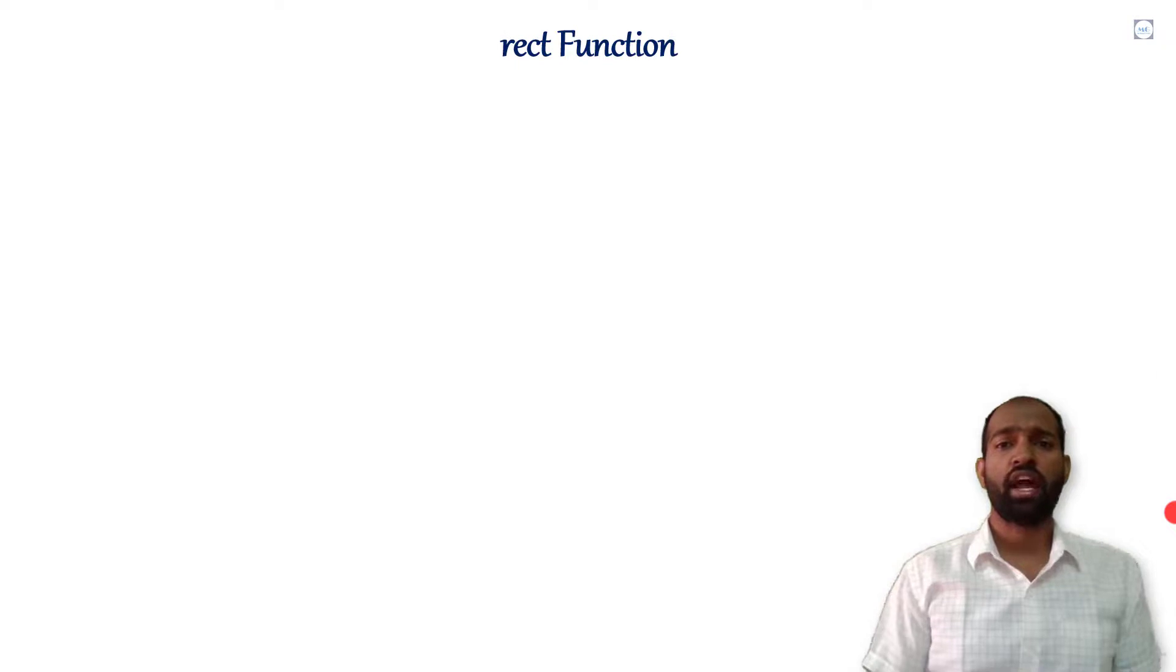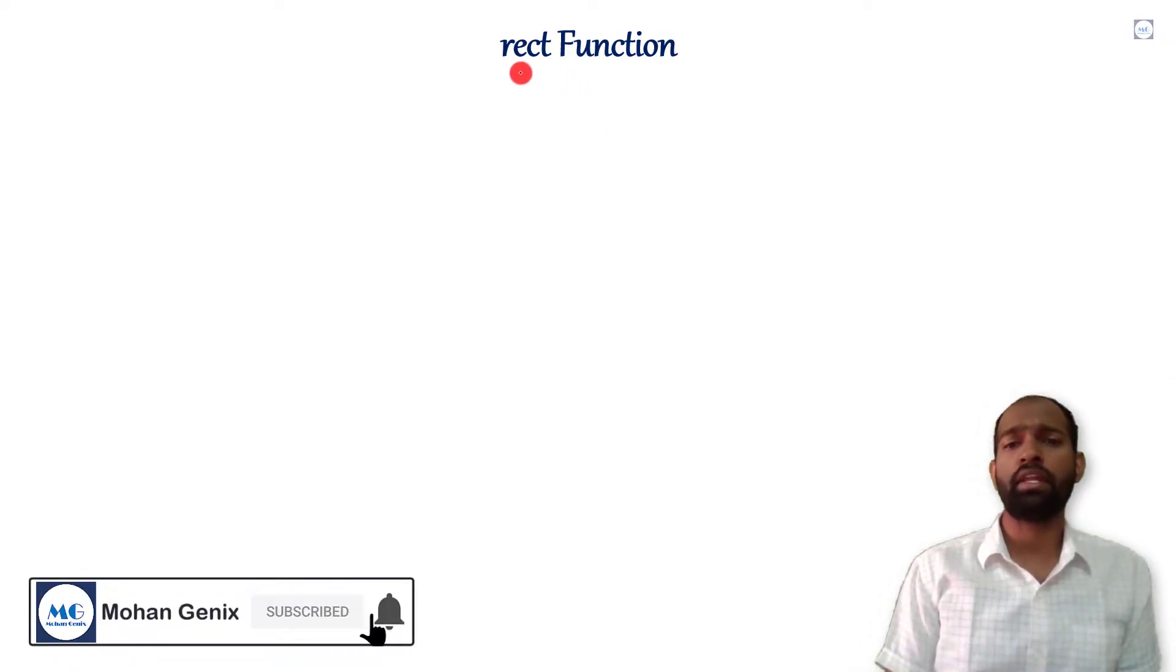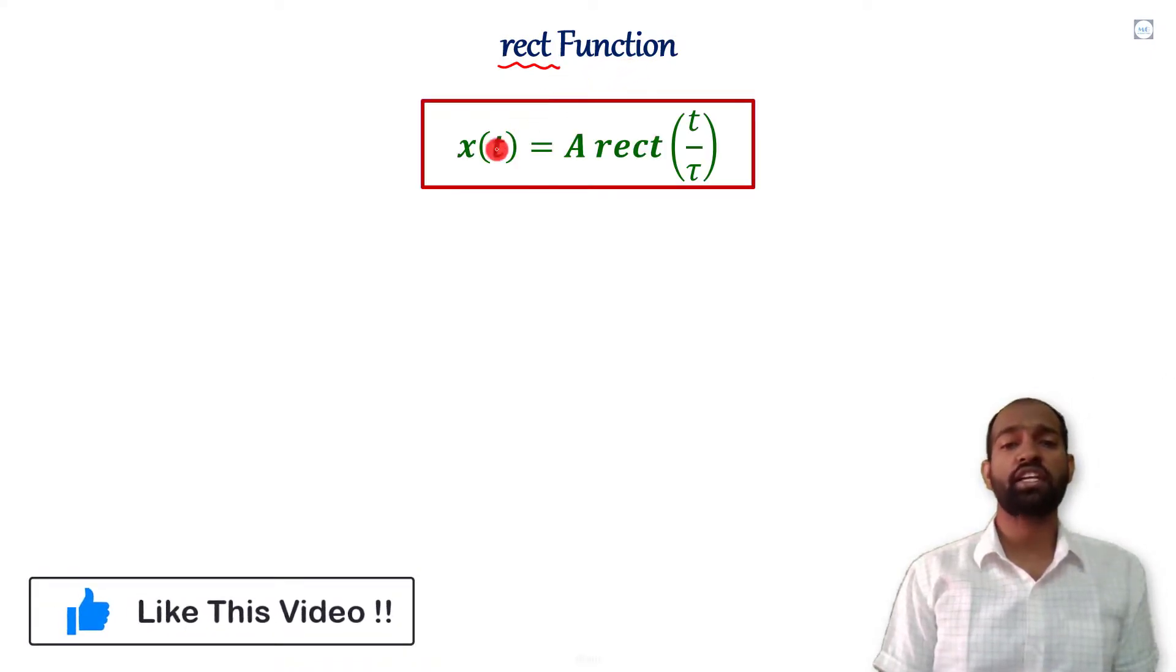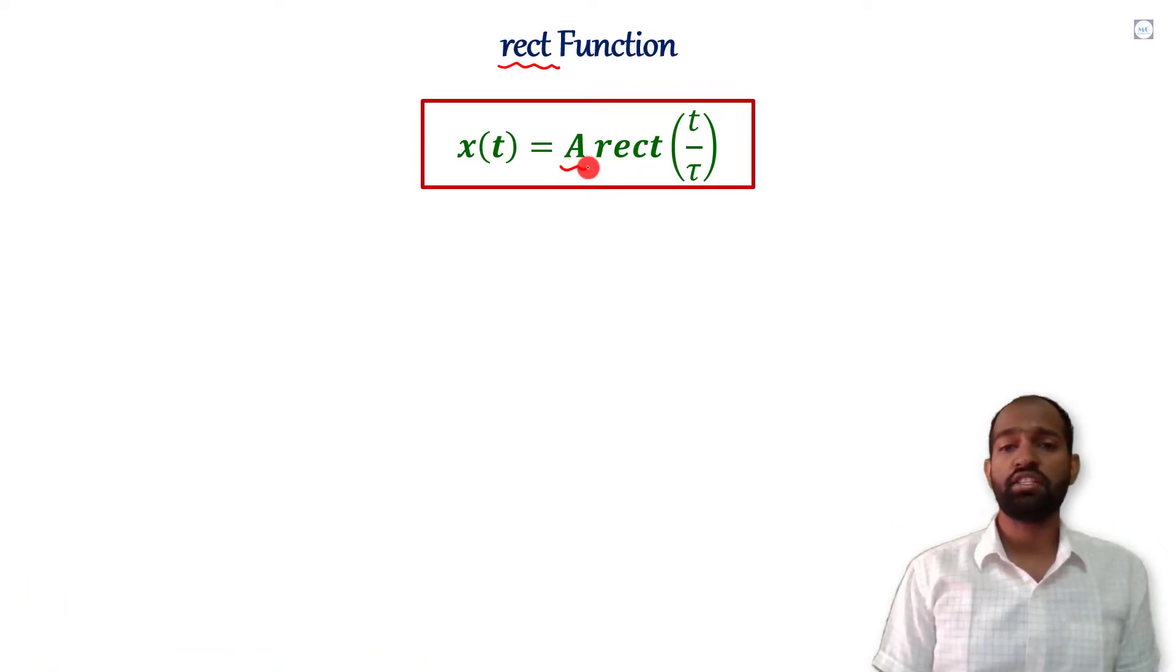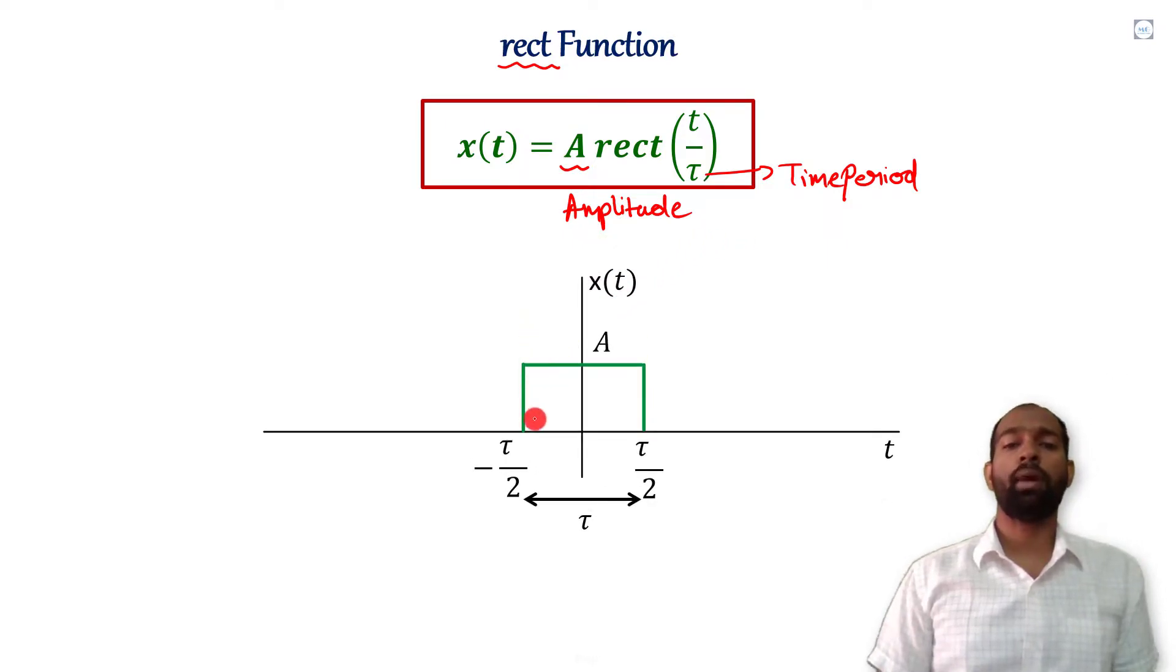Rect function or rectangular function can simply be written as rect function. It can be represented as x(t) equals A rect(t/τ). Here A is the amplitude and τ is the time period. This τ is the time period of that rect or rectangular function.